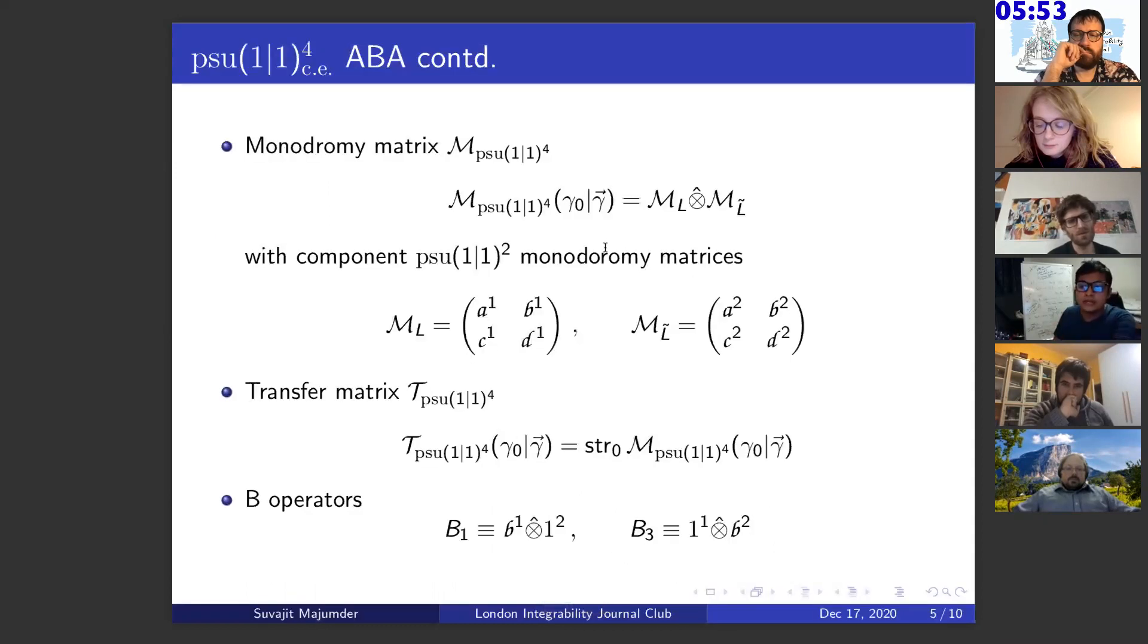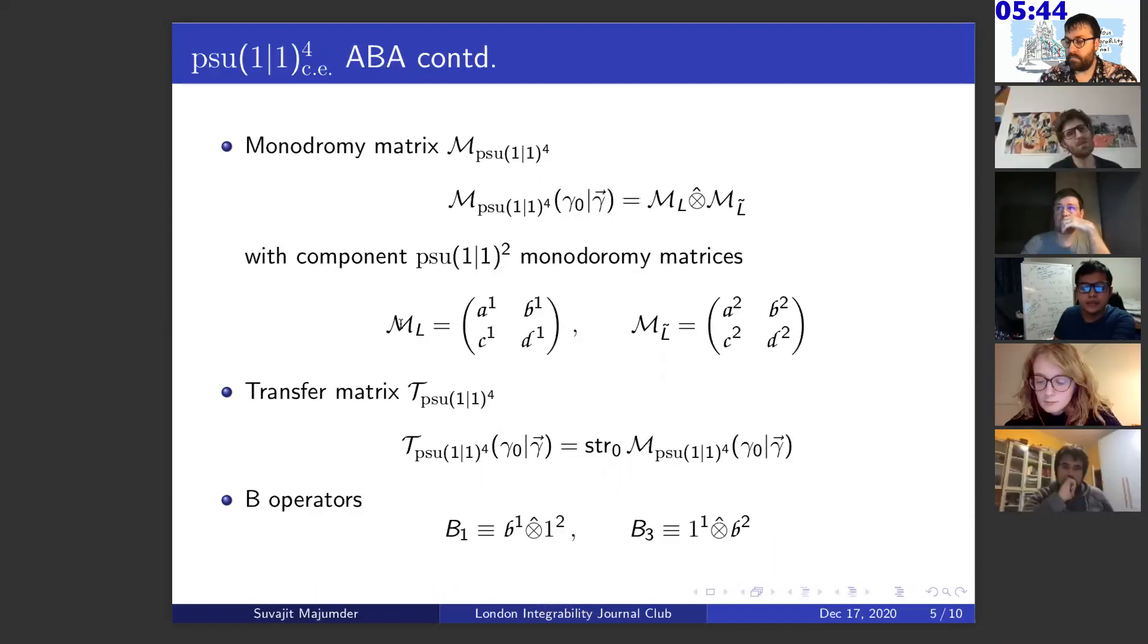Now, using these R matrix that I mentioned, we can generate the monodromy matrix, which again is a tensor product of the component monodromy matrices. And this component once again be written down in terms of this spin chain operators, sort of spin chain operators like this. And so, these B operators showing up here will be used to generate the Bethe ansatz. And the transfer matrix is again just a super trace over the auxiliary space of the monodromy matrix that we introduced.